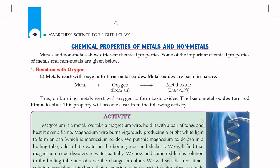Let's move on to our topic. First: reaction with oxygen. Metals react with oxygen to form metal oxides. Metal oxides are basic in nature. This means they will turn red litmus paper to blue. The word equation is: when a metal reacts with oxygen from air, it gives us a metal oxide, and metal oxides are basic oxides.